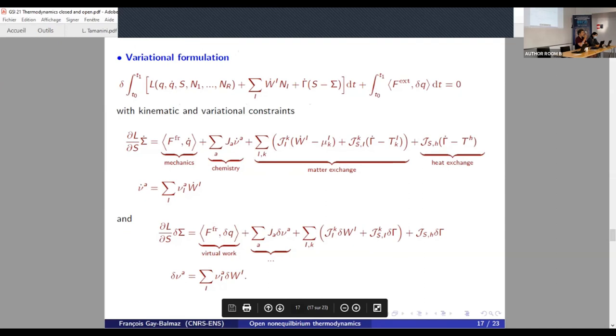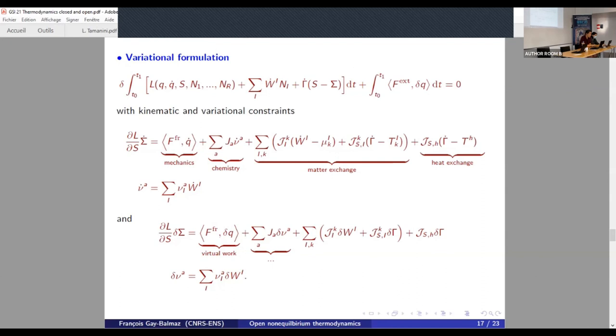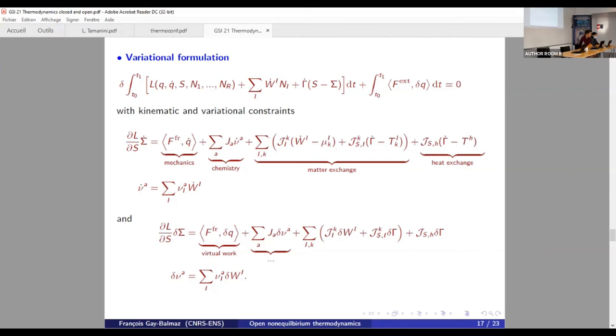Most importantly, this is the incarnation of the general principle for this example. So let me give you some detail. So this is Hamilton's principle, where you recognize here the Lagrangian augmented by this term, which is mu, the chemical potential times the number of moles. You have the same term as before, the difference between the total entropy and the produced entropy. And the constraints have this form. So in the kinematic constraint, you put all the process that you have from mechanics, chemistry, exchange of matter, exchange of heat. And in the variational version, it's exactly the same except that these external terms have disappeared.